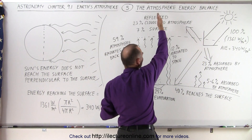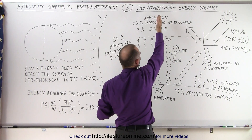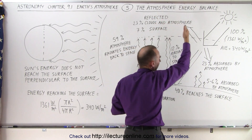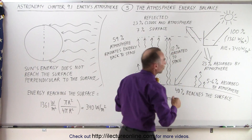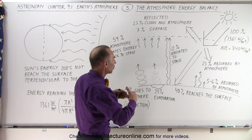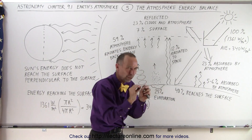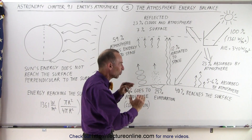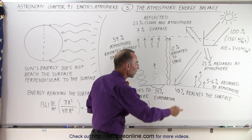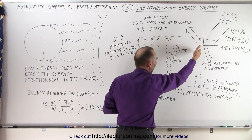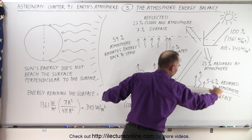After about 30% of the energy has been reflected or scattered back into space, and about 23% has been absorbed by the atmosphere, the remainder — which is about 48% (with some rounding) — finally does reach the surface of the Earth, warming the surface.